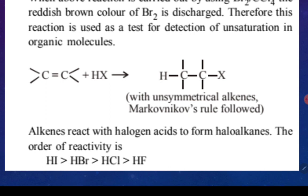The reactivity of HX is: HI > HBr > HCl > HF — the same order as before. In conclusion: when alkene reacts with HX, hydrogen attaches to one carbon of the double bond and X attaches to the other, following Markovnikov's rule — the nucleophile X⁻ attaches to the carbon with less hydrogen.